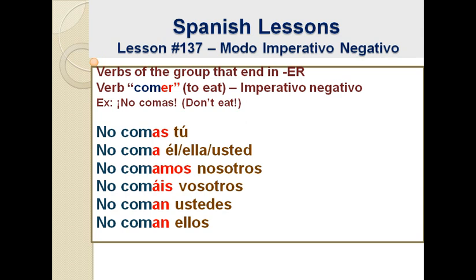For the first group we would say no hables tú — we add an E and an S. And here for the ER group we add an A and an S. So the difference between the conjugation of the first group, the ones that end in AR, and this one, is that wherever we have an A in the ER group for the imperative negative, in the AR group we had an E. Also, comparing with the imperative affirmative: here we say no comas tú, while in the affirmative we would say come tú. And for vosotros, we say no comáis vosotros, while in the affirmative we would say comed vosotros.